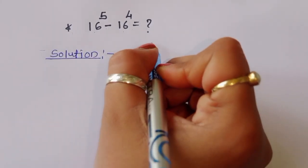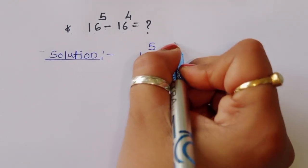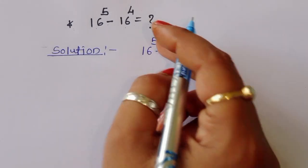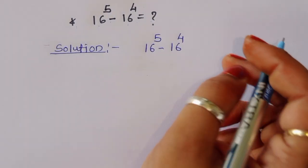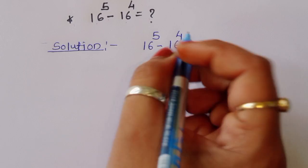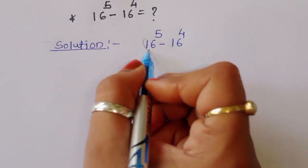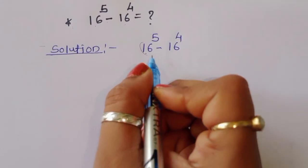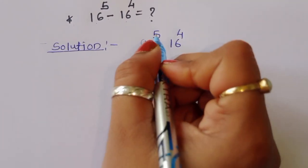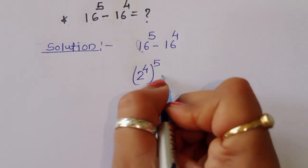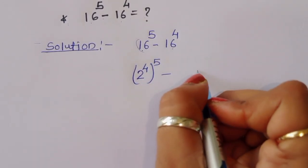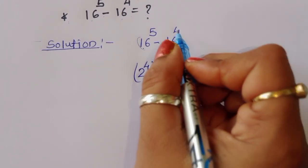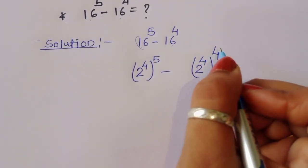16 power 5 minus 16 power 4 is given. This is a very big number, so we have to simplify it. Now, 16 we can write as 2 power 4. So we have 2 power 4, power 5, minus 2 power 4, power 4.